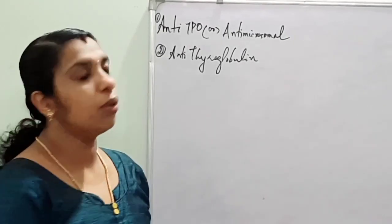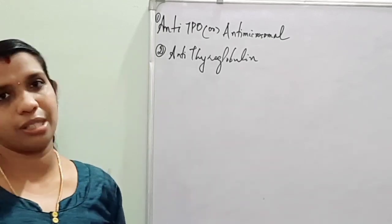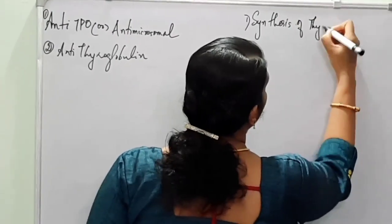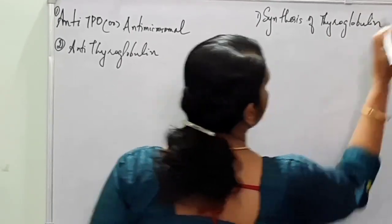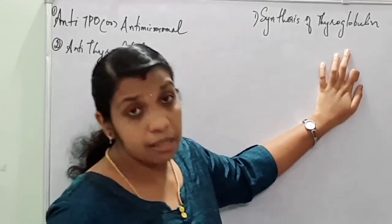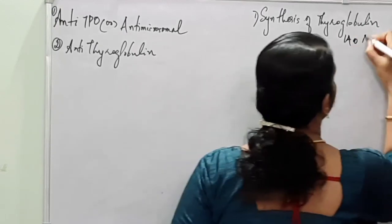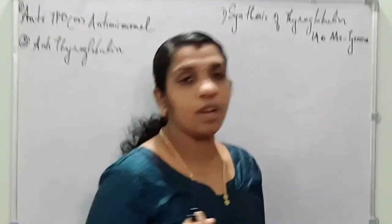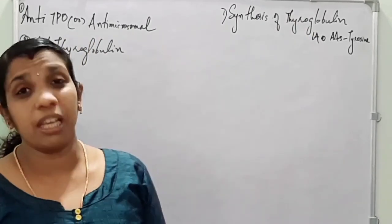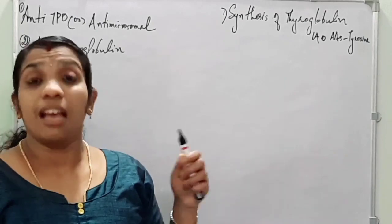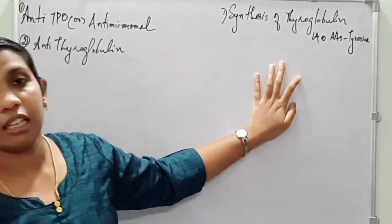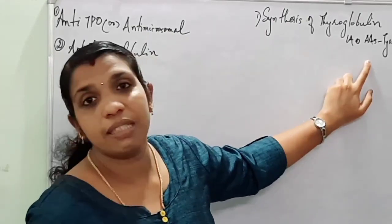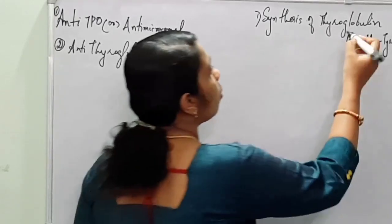In the synthesis of thyroid hormones there are four steps. The first is synthesis of thyroglobulin. This thyroglobulin consists of about 140 amino acids named tyrosine, and it is prepared from the endoplasmic reticulum and Golgi apparatus situated in the follicular cells of the thyroid gland. Thyroglobulin is very, very important — please keep a note on this.